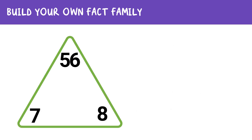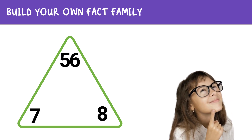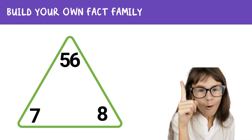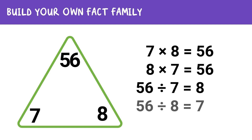Let's try one more. The numbers in this fact family are 7, 8, and 56. Can you write the multiplication and division facts to complete the fact family? Here's what we get: 7 times 8 equals 56, 8 times 7 equals 56, 56 divided by 7 equals 8, and 56 divided by 8 equals 7.